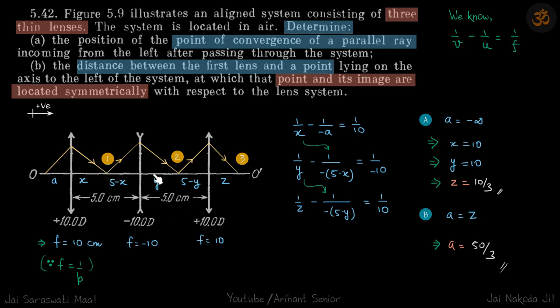Now we'll just find the positions of i1, i2, and i3 using our lens formula which is this. So for the first lens, 1 by v minus 1 by u is 1 by f. So v is at x, so with our sign conventions right side is positive, so minus 1 by u. So u will be minus a.